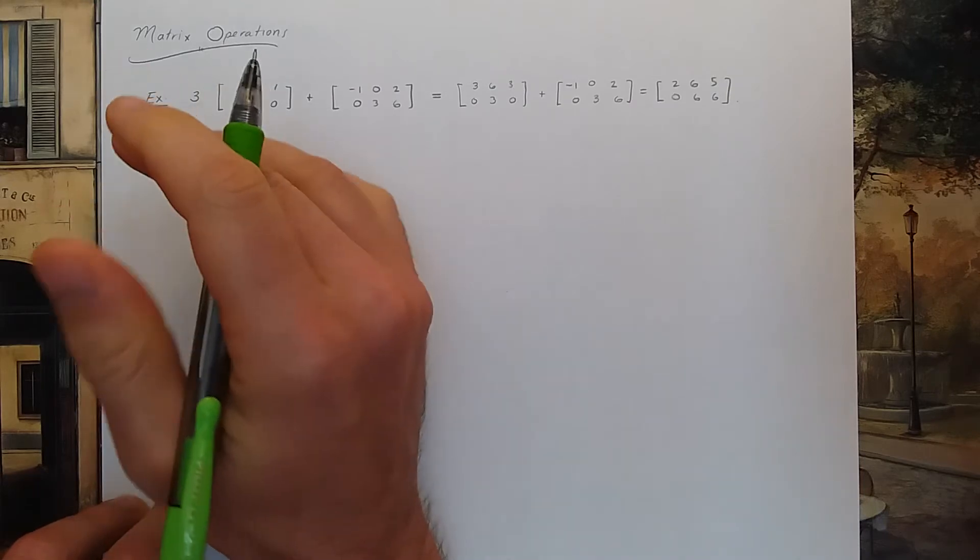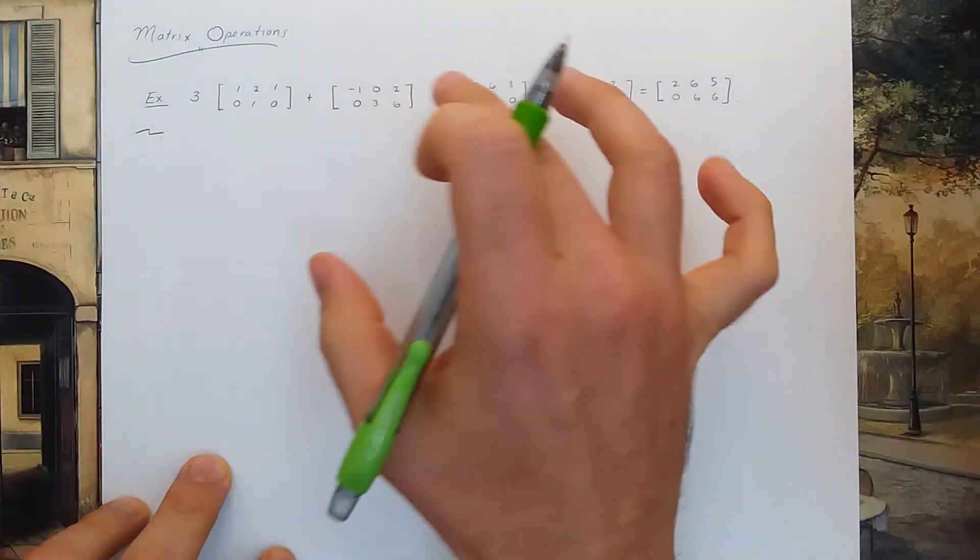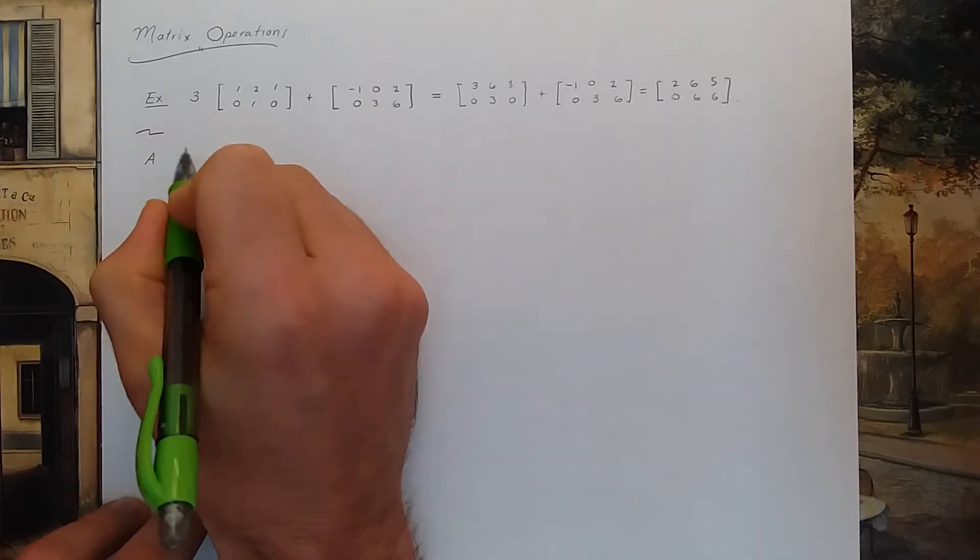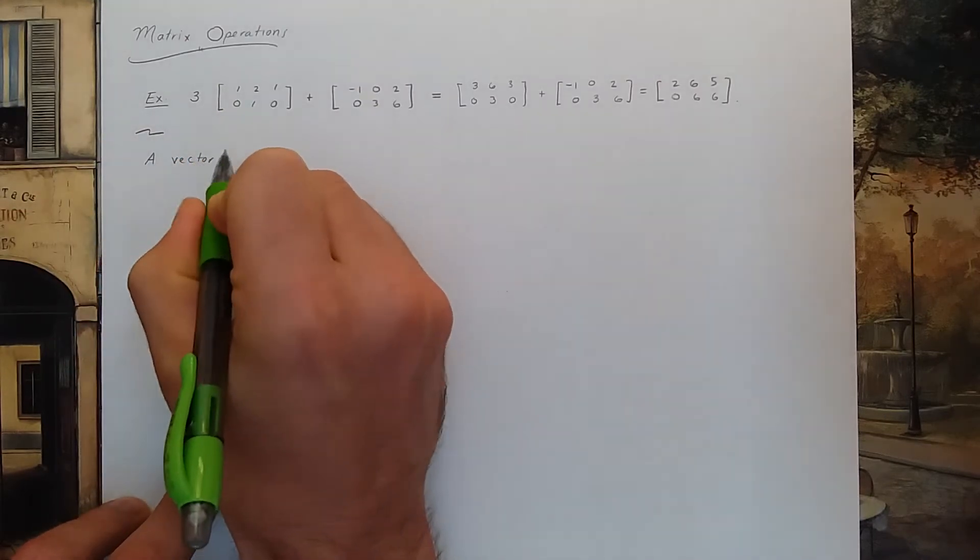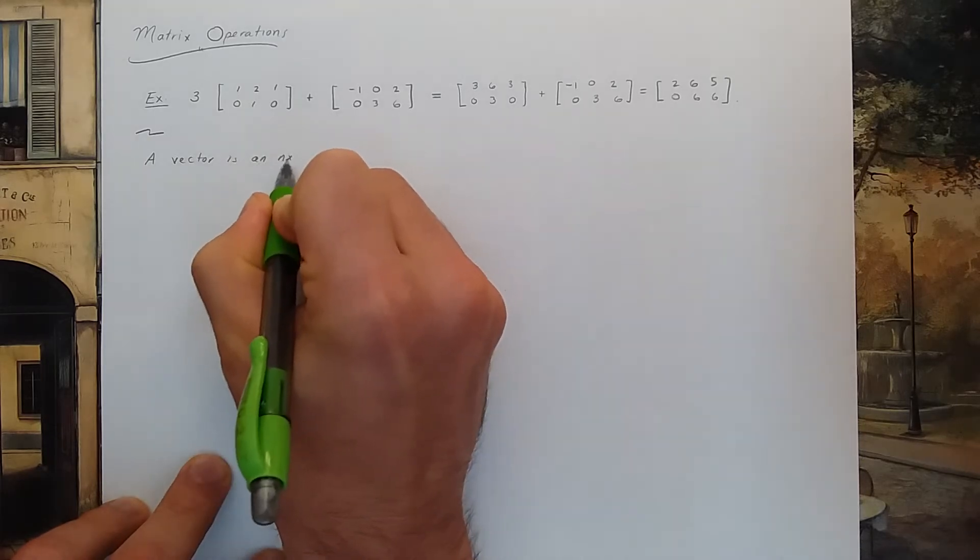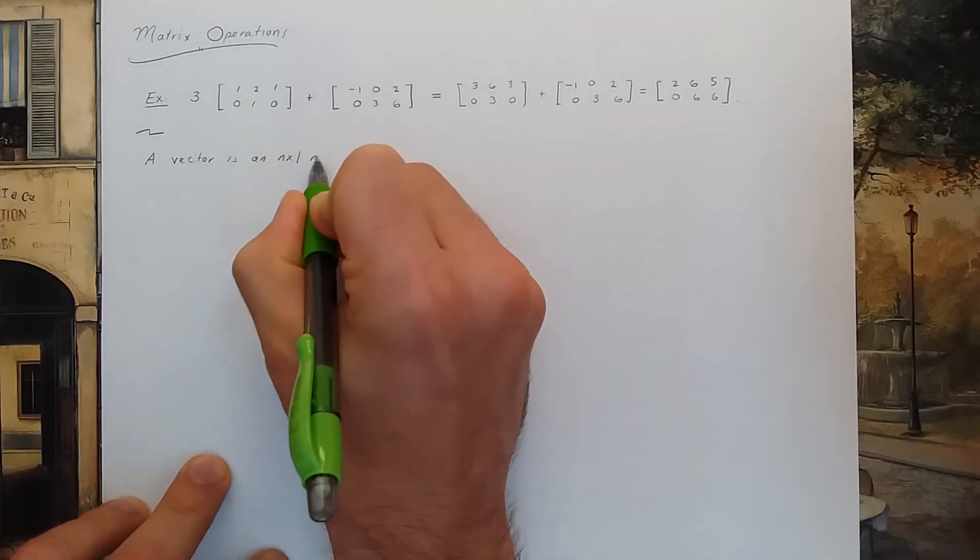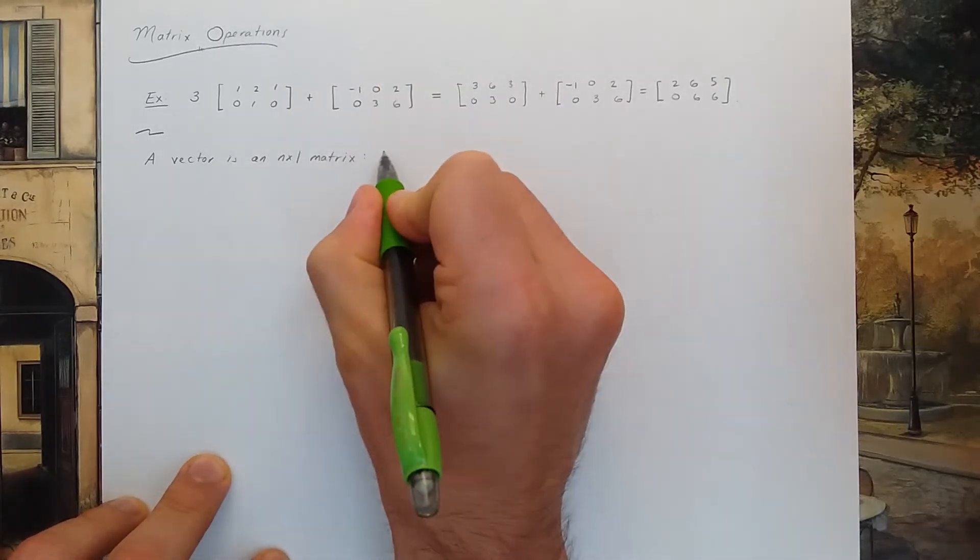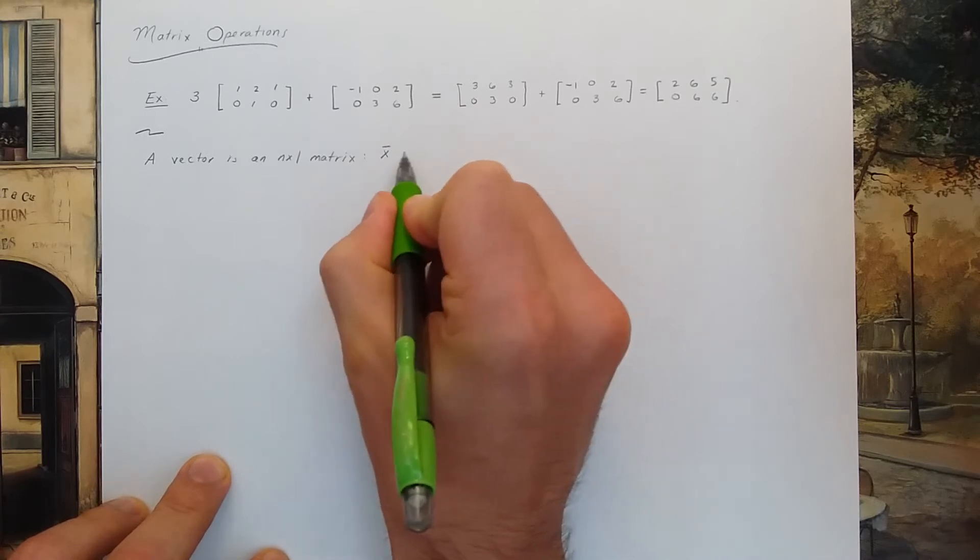Now let's get into multiplying a matrix times a vector. What is a vector in our context? A vector is simply an n by 1 matrix. So it's a matrix with exactly one column but can have many rows.